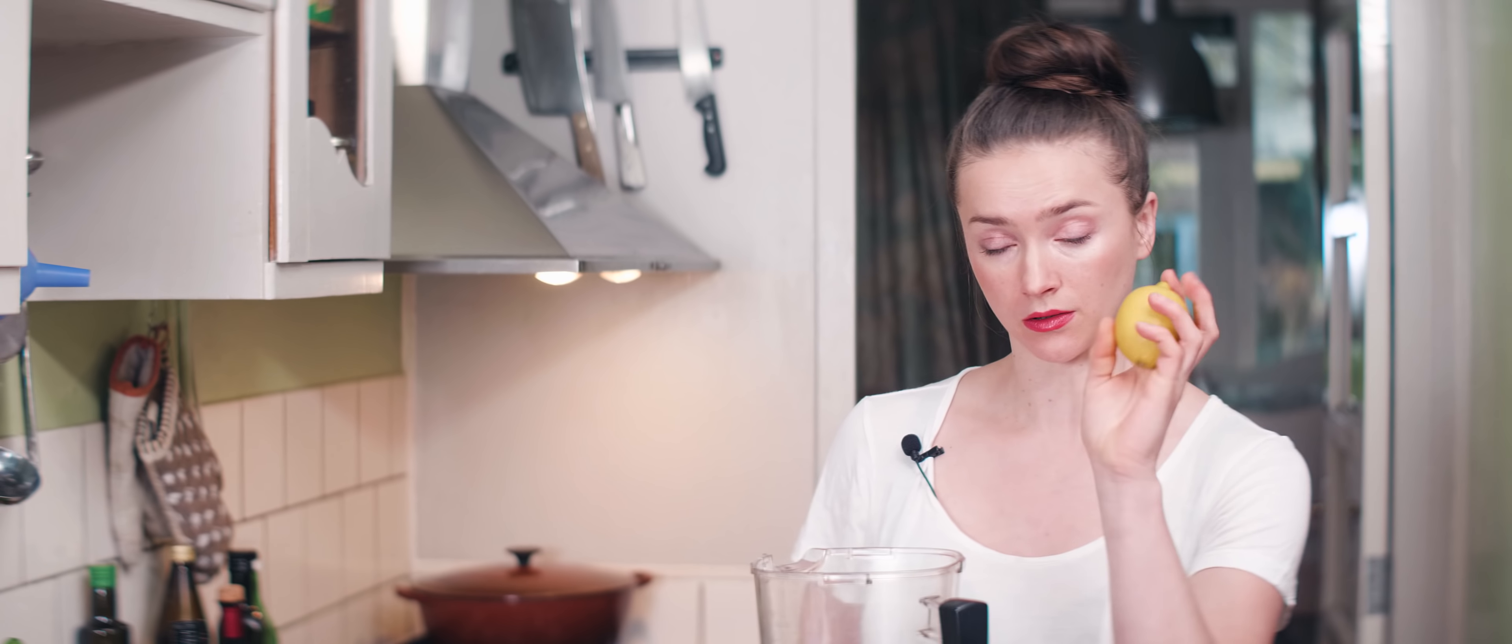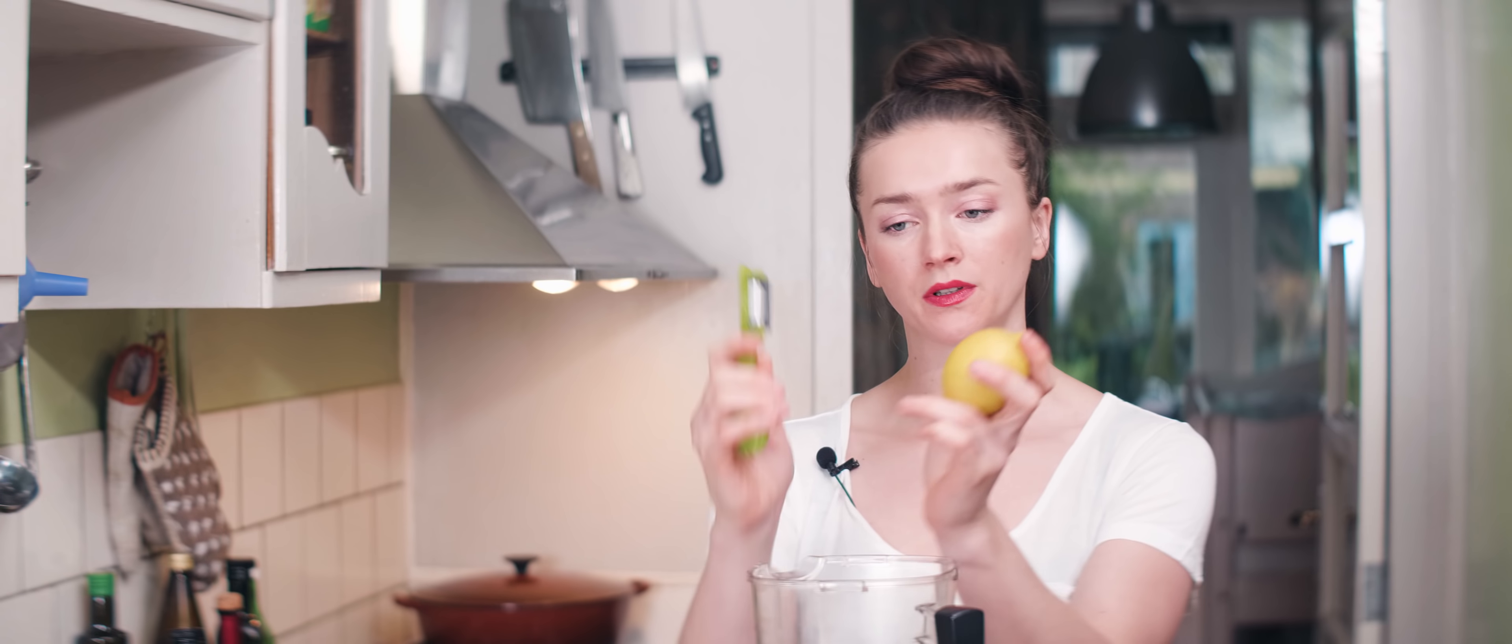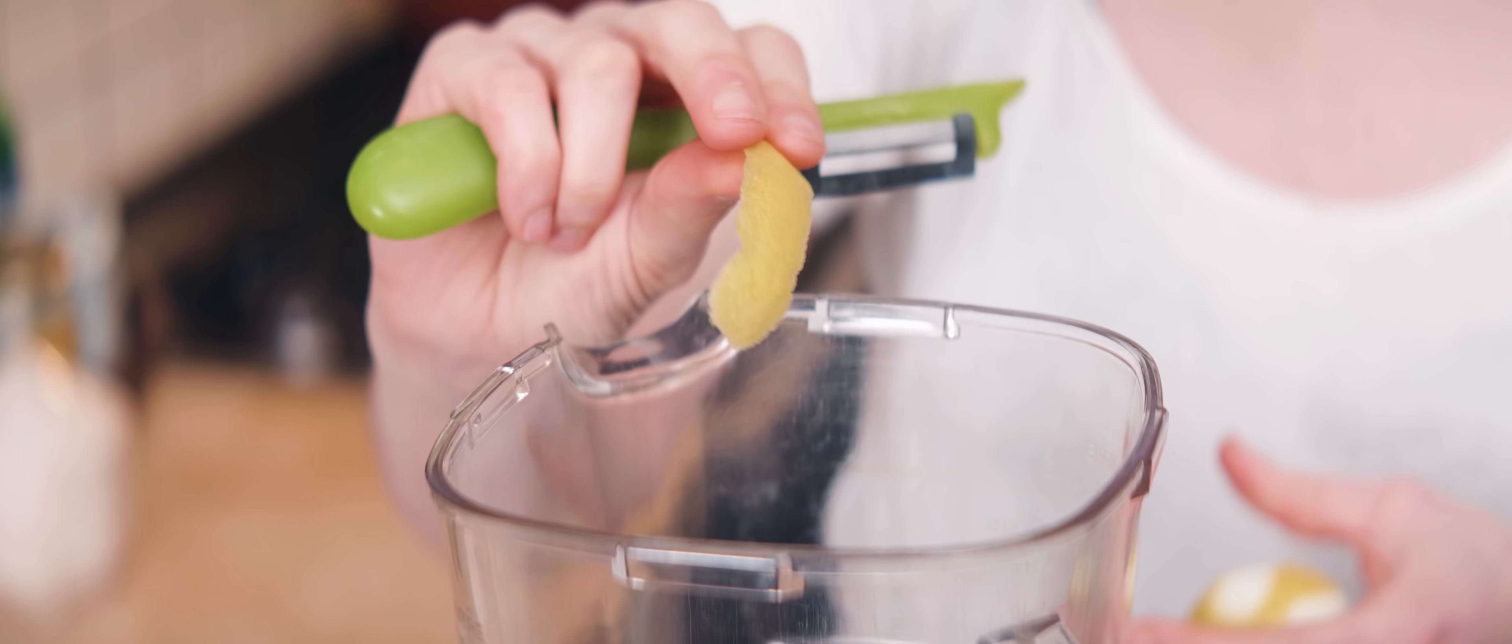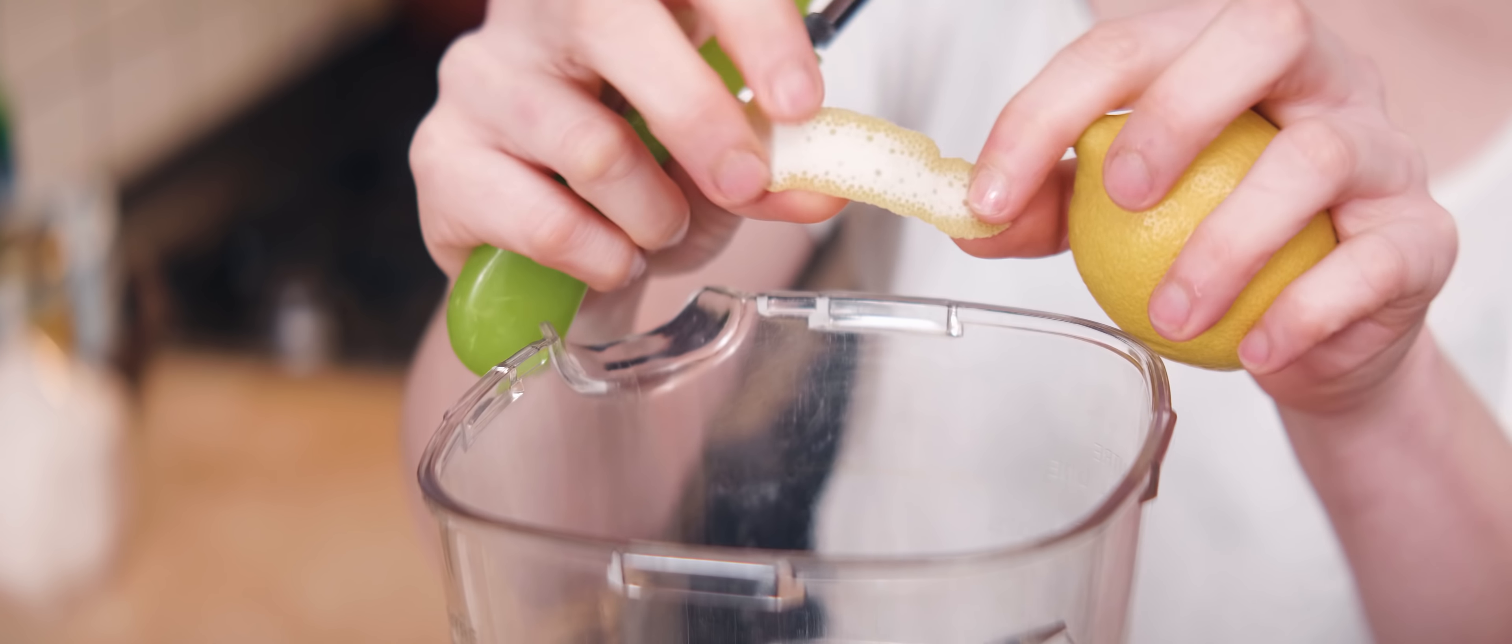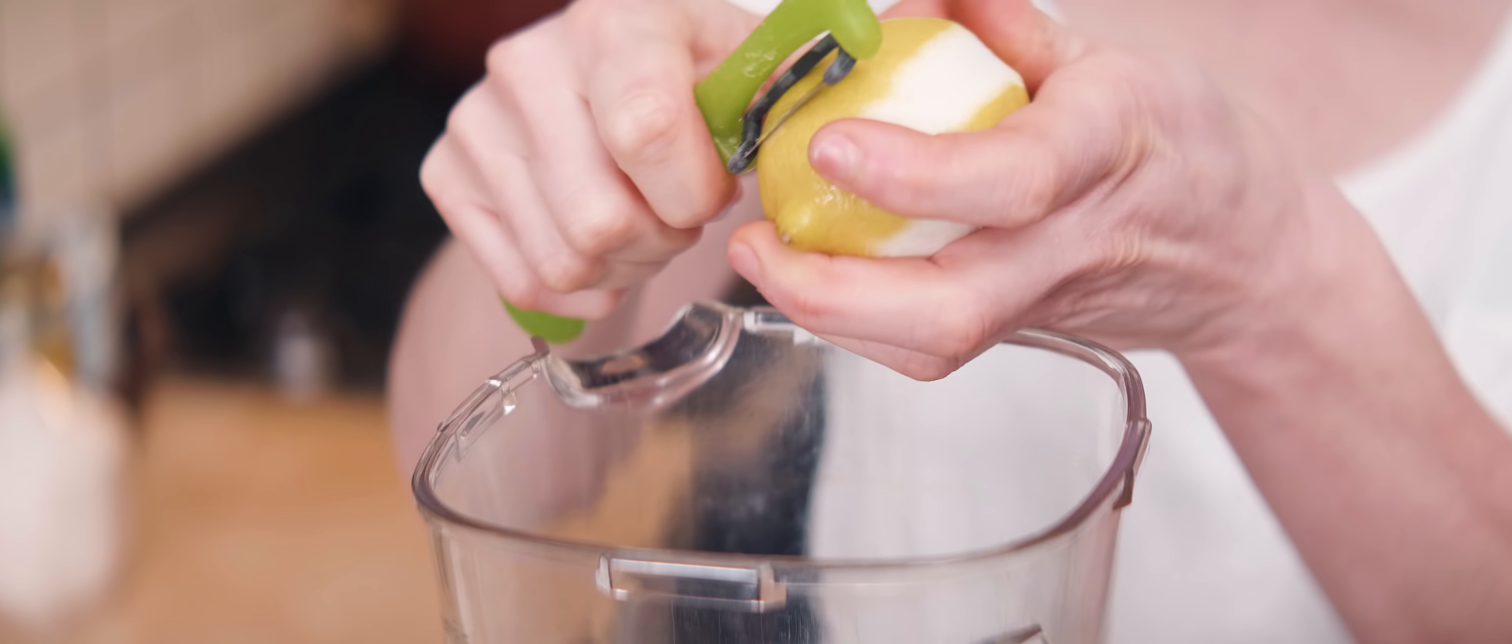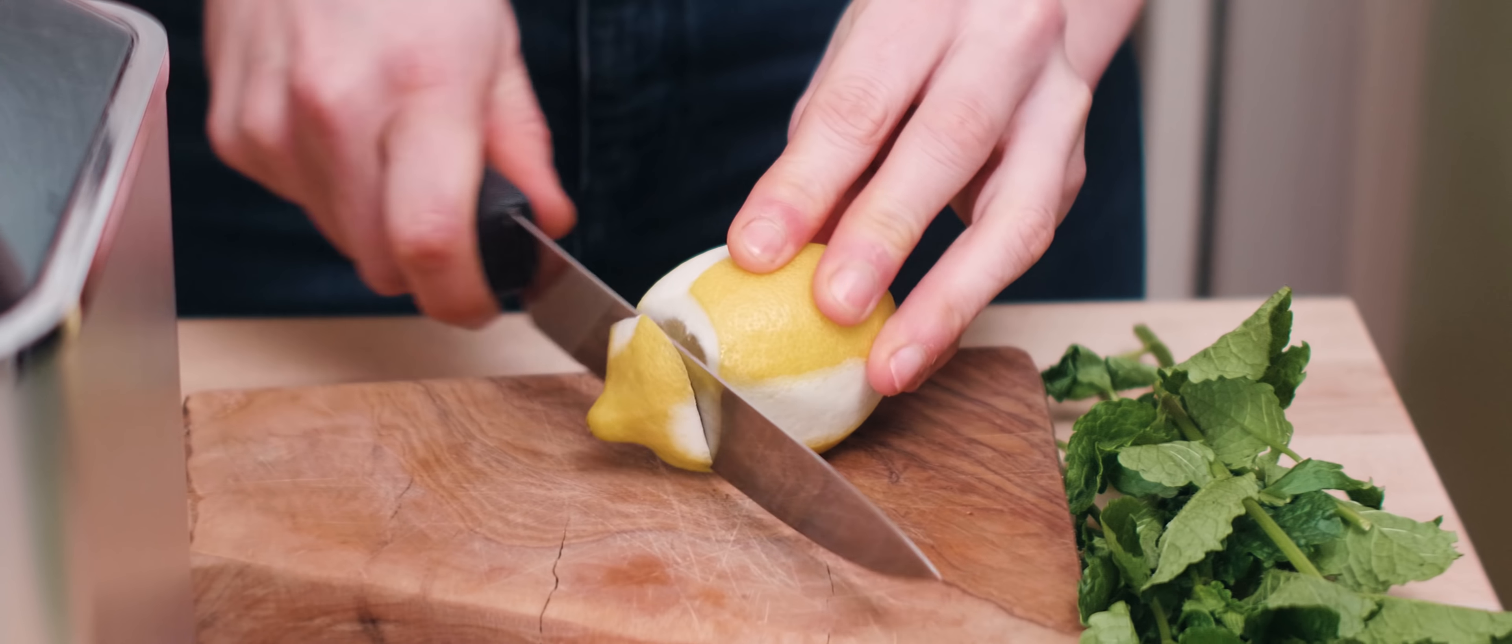I'm going to use my thin slicer or the peeler, so I peel the skin off and I make sure that I have as little white part as possible because that is quite bitter. I think I'm going to use about four slices, and then I'll just cut off the rest of the skin of my lemon.